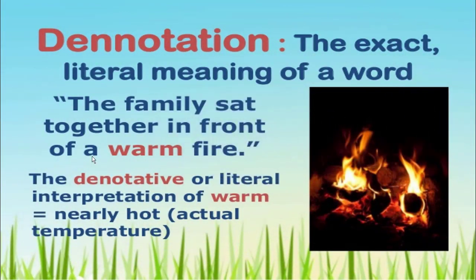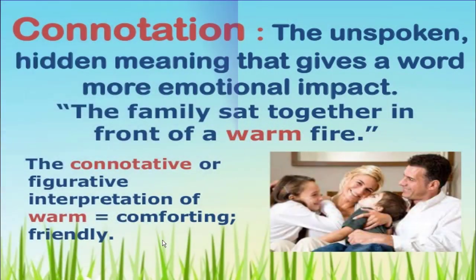Denotation is the exact literal meaning of a word. For example: 'the family sat together in front of a warm fire.' The denotative or literal interpretation of 'warm' is nearly hot, which shows the actual temperature of the room. Connotation is the unspoken, hidden meaning that gives a word more emotional impact. In the same sentence, the connotative or figurative interpretation of 'warm' is comforting or friendly.